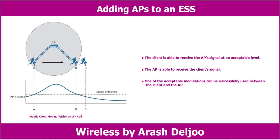Consider the cell that we can see in this figure. As long as the client stays within point A and B, three conditions are met. First, the client is able to receive the AP signal at an acceptable level. Second, the AP is able to receive the client's signal. And third, one of the acceptable modulations can be successfully used between the client and the AP.